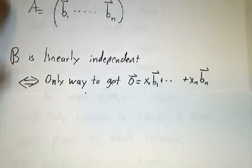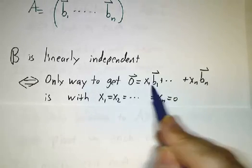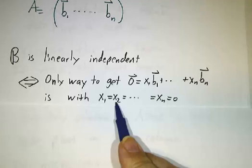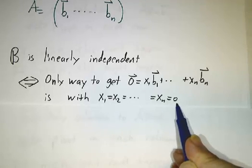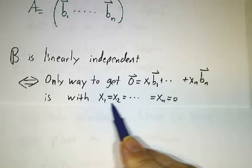If those vectors are linearly independent, the definition is that the only way to get 0 as a linear combination is if all of the coefficients are 0. So the only way to get 0 as x1*b1 plus xn*bn is if all of the x's are 0.